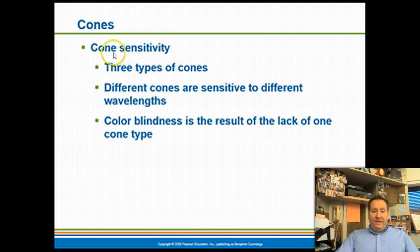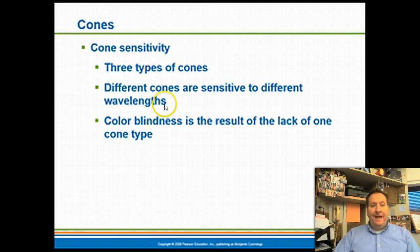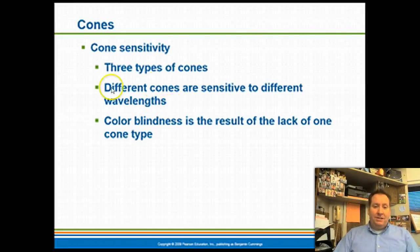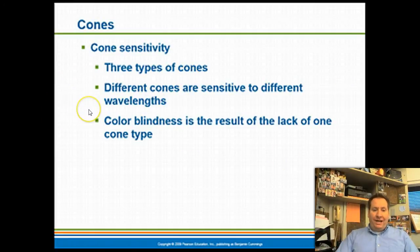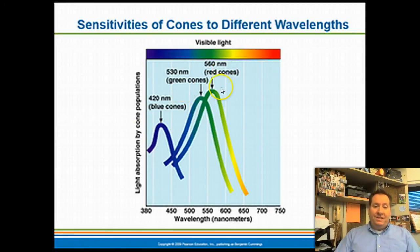Different cones are sensitive to different wavelengths of light — we have blue, green, and red cones — and the mixing of these wavelengths produces the colors we perceive. If you are genetically lacking a particular type of cone, we call this color blindness.